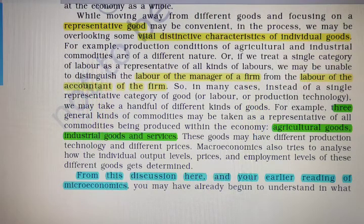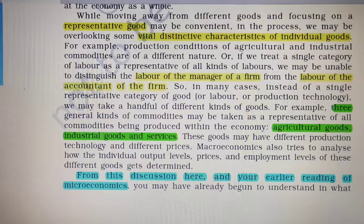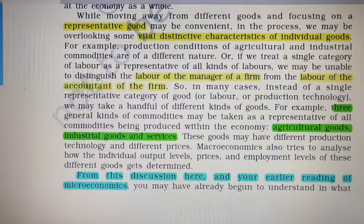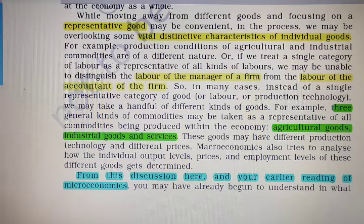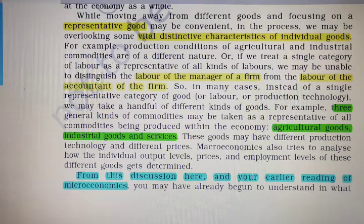Moving away from different goods and focusing on a representative good may be convenient, but in the process we may be overlooking some vital distinctive characteristics of individual goods. In the previous paragraph, we took one commodity and thought of it as a representative good — assuming it would represent the behavior of all commodities in the market. But proceeding further, the problem is that vital distinctive characteristics of individual goods may be overlooked when we consider only a single commodity.